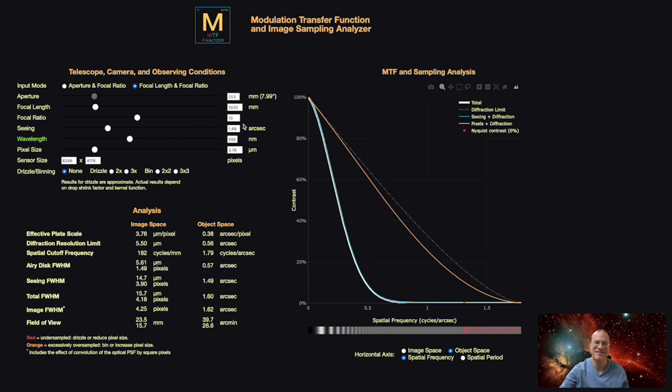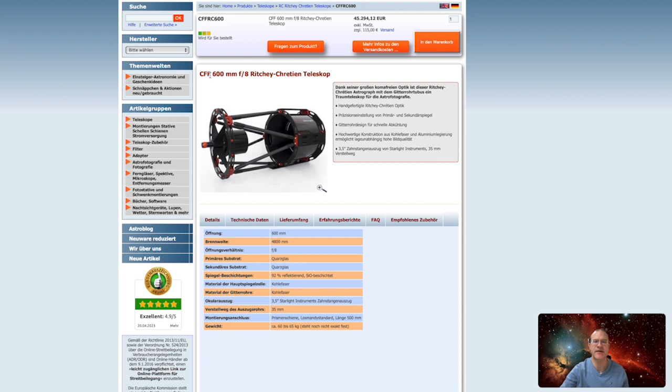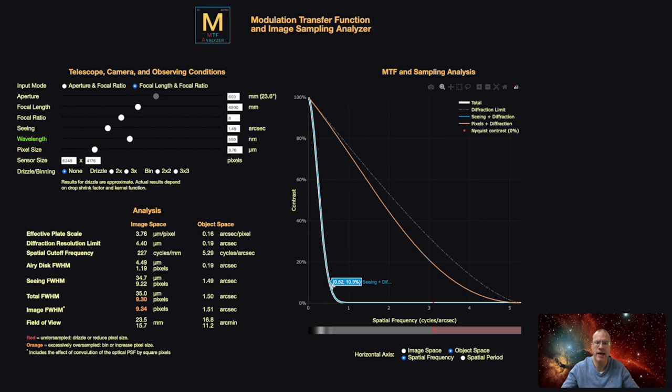And I want to make a last example and stick with me because there is a message behind it and something which I really want you to consider. So we will now take a last example. And let's say I just won the lottery. So I go crazy. And so I decided I go for this here. The CFF 600 millimeters F8 Ritchey-Chrétien telescope. It just costs 45,000 euros. But hey, I want to make really cool pictures. So let's buy it. So this monster has 4800 millimeter focal length and the aperture of F8. So I already entered that here. And look at that. There's all this potential which we lose simply because of seeing. And if you look at that, what it really means. Image space, we're at about 30. And object space, we are about 0.65 cycles per arc seconds.